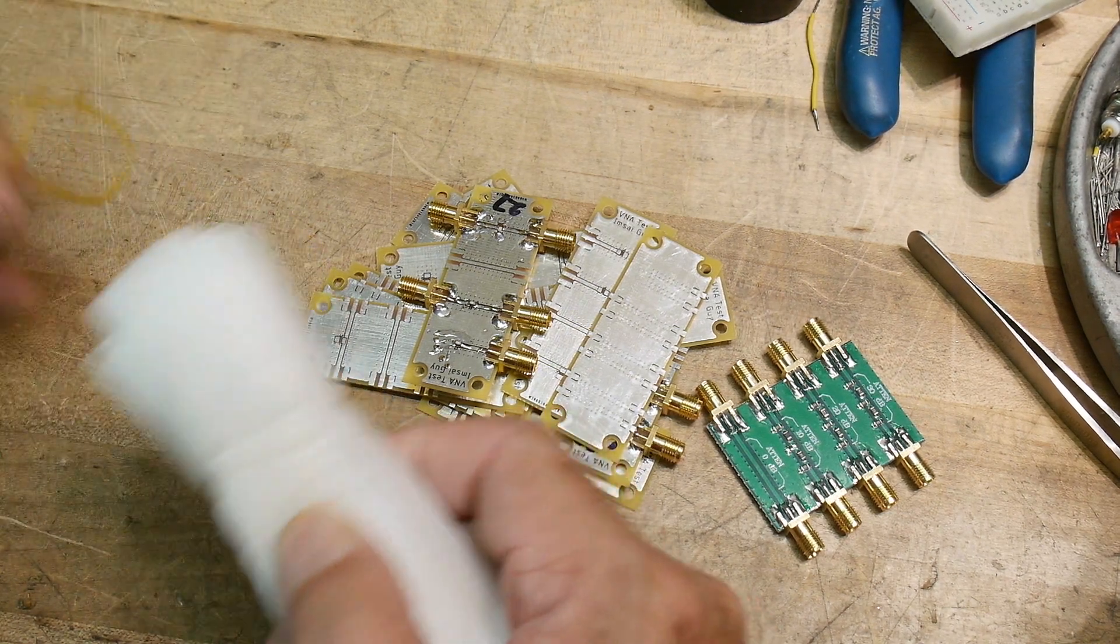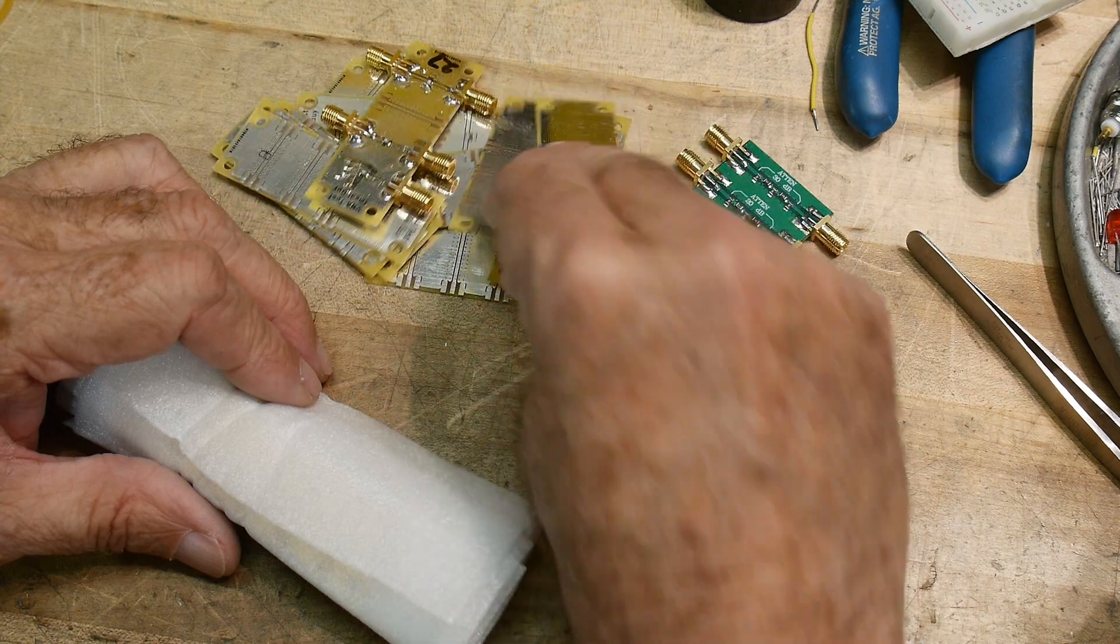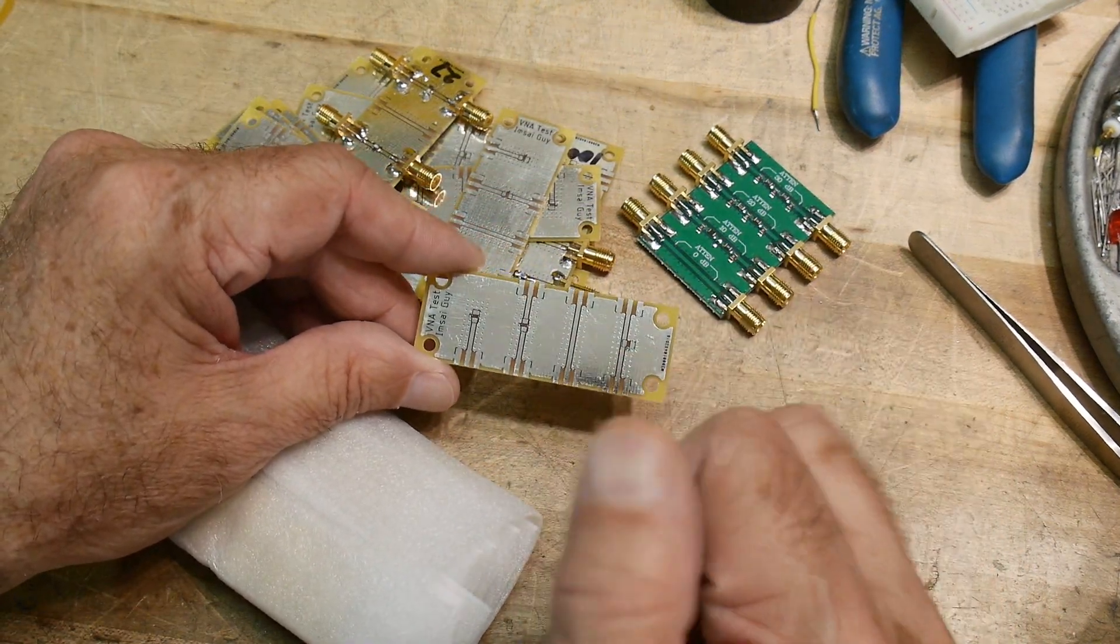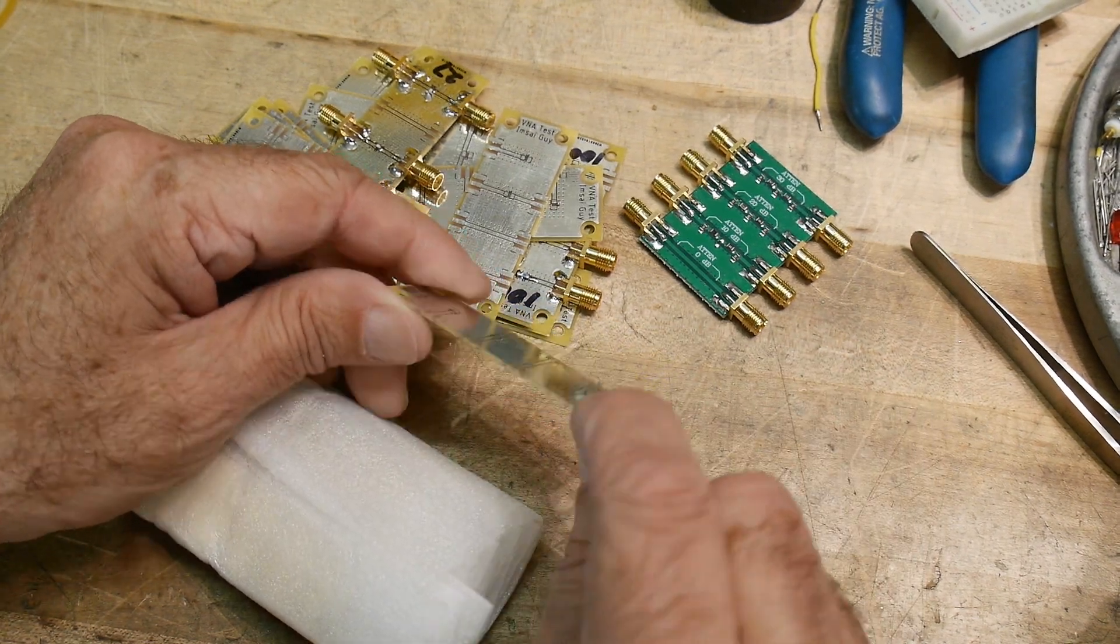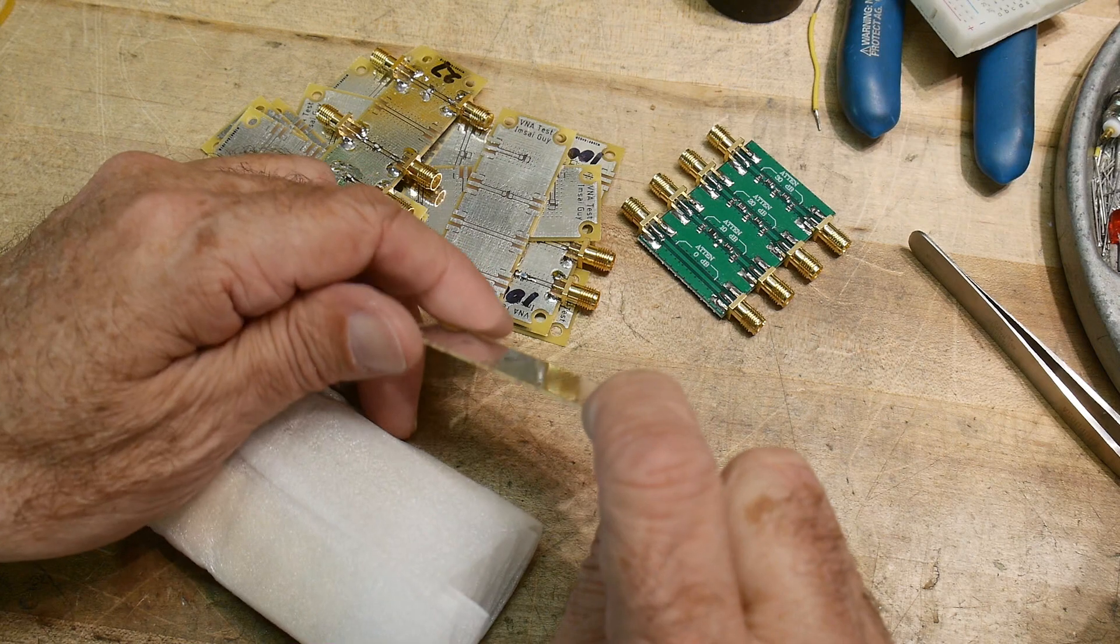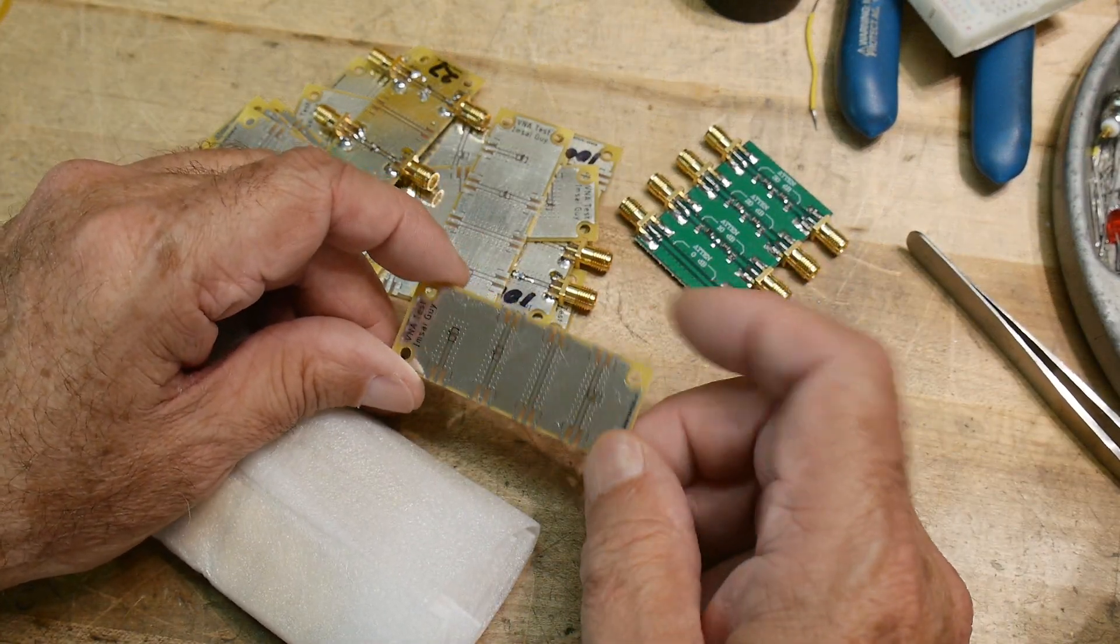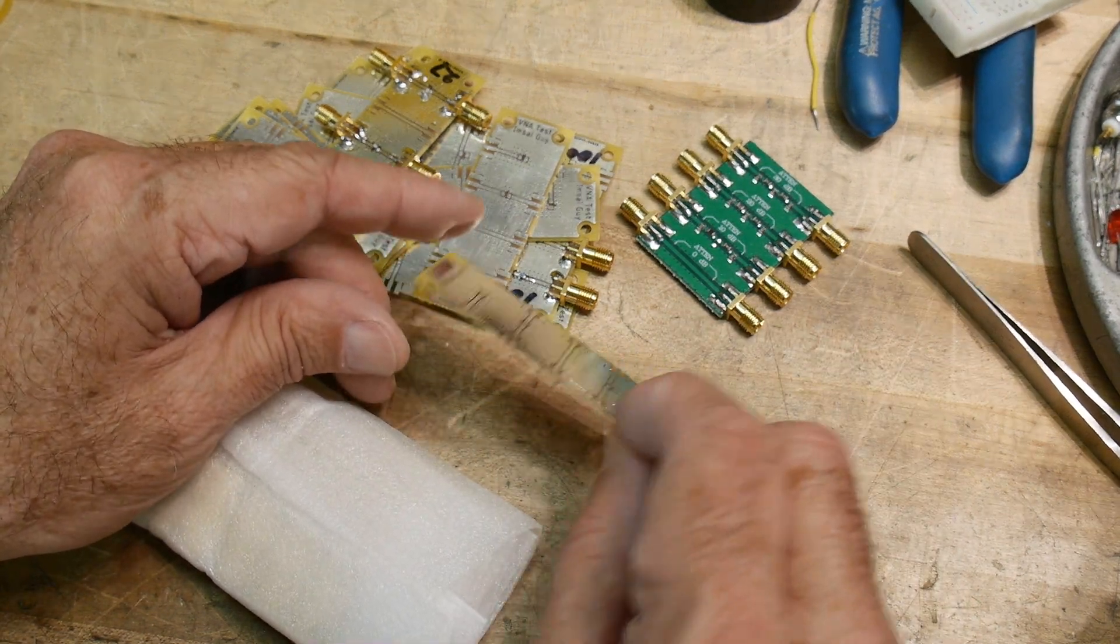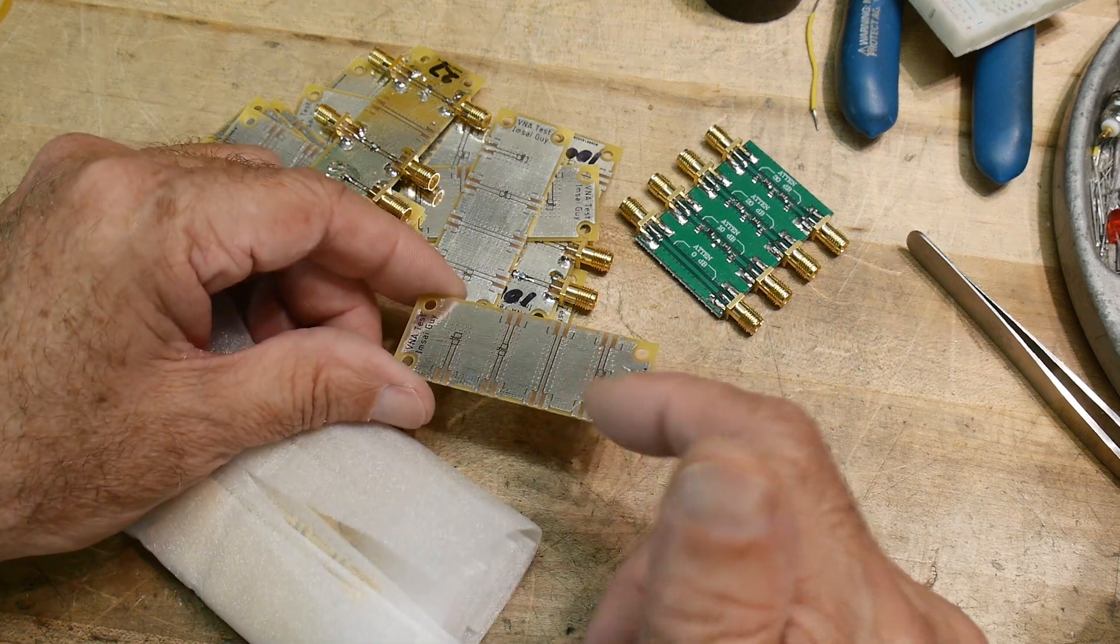The rev A boards had two issues. One was the PC board is a little thinner than I believed it was supposed to be. I'm sure it's perfectly within tolerance for their manufacturing process, but for very tightly controlled boards I needed to know the exact thickness.